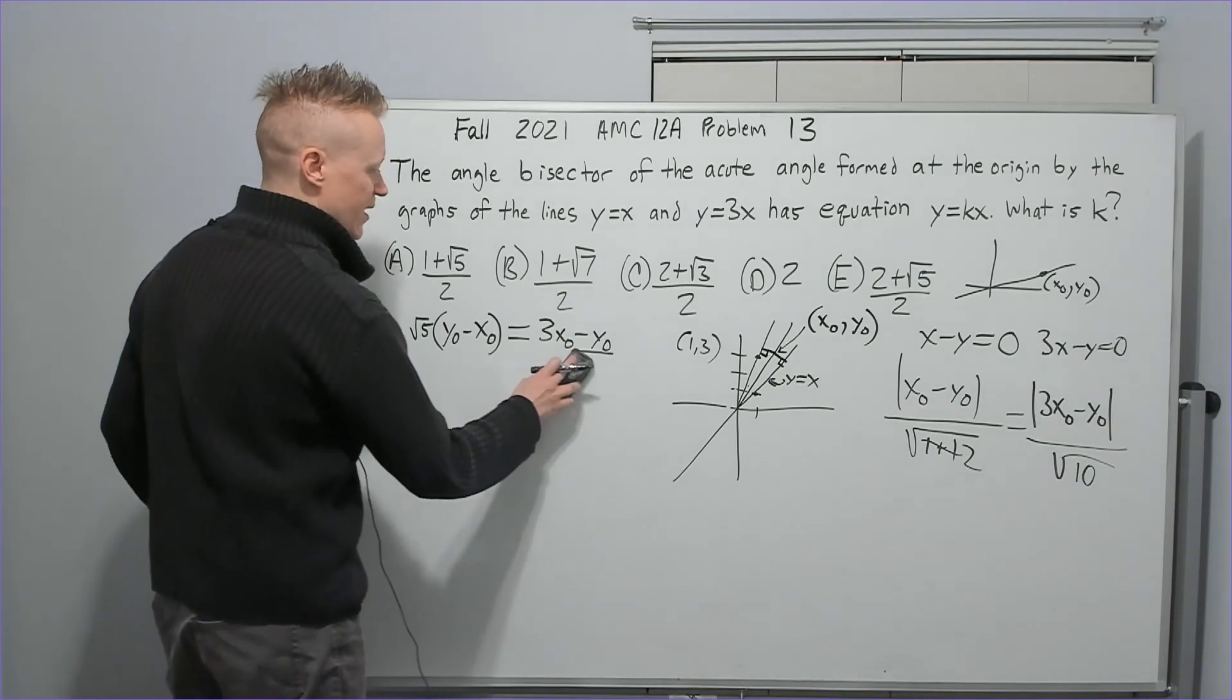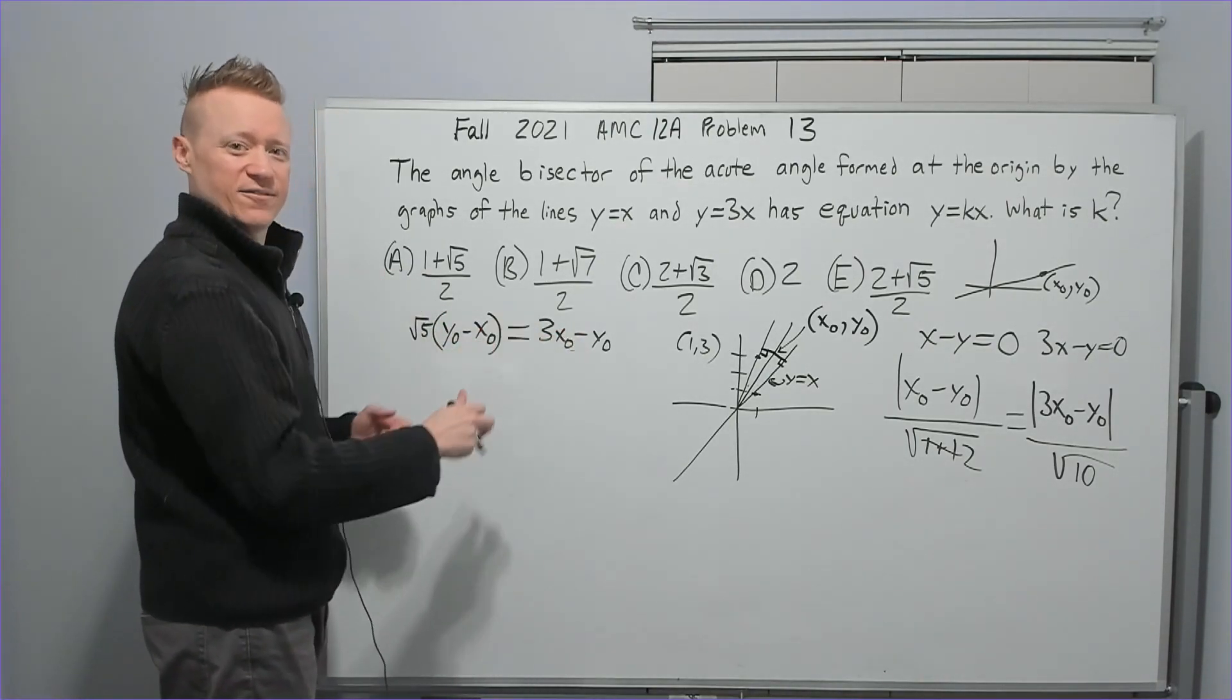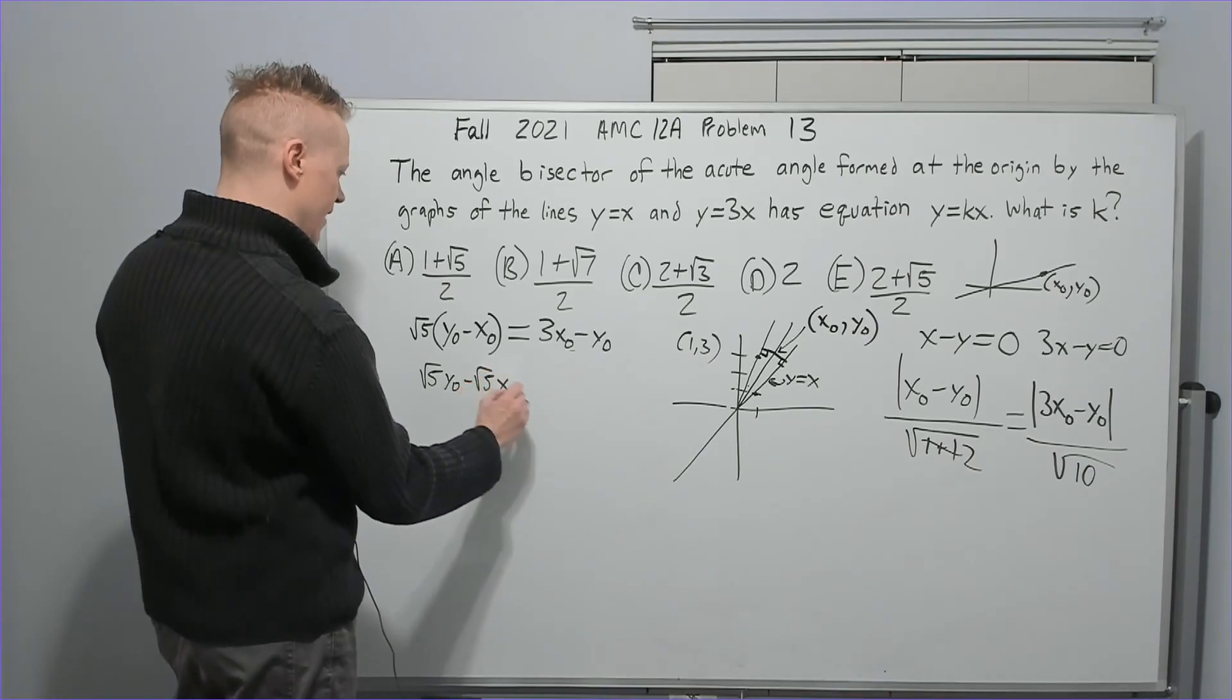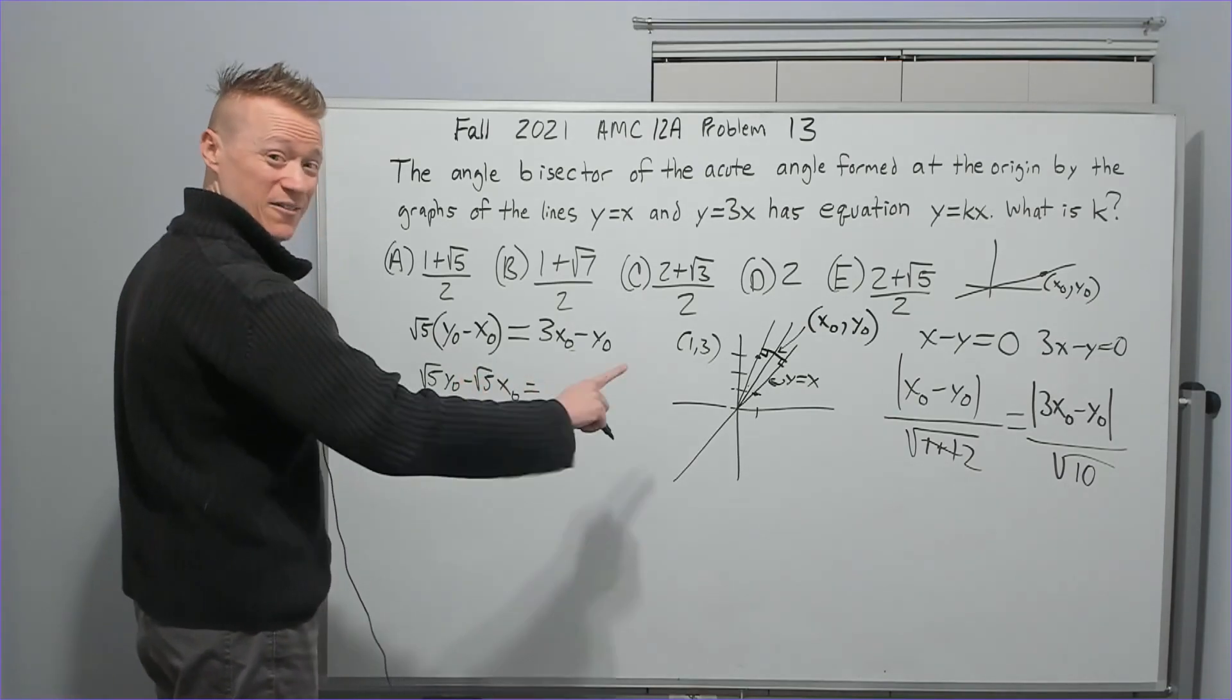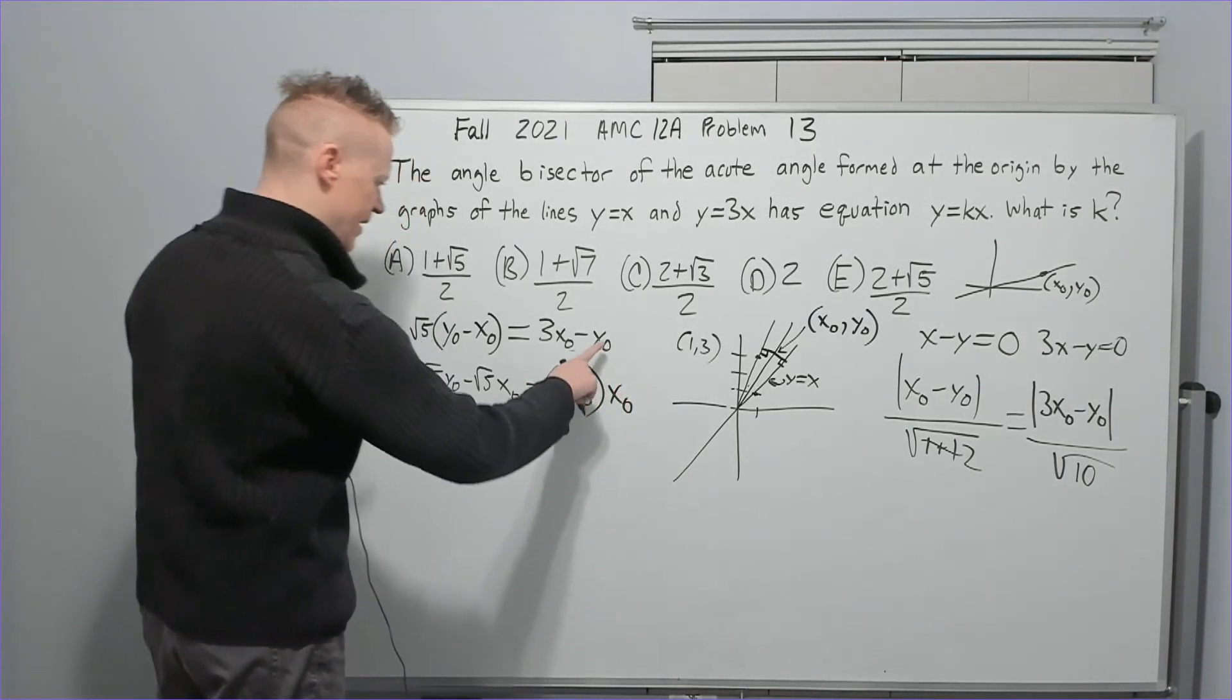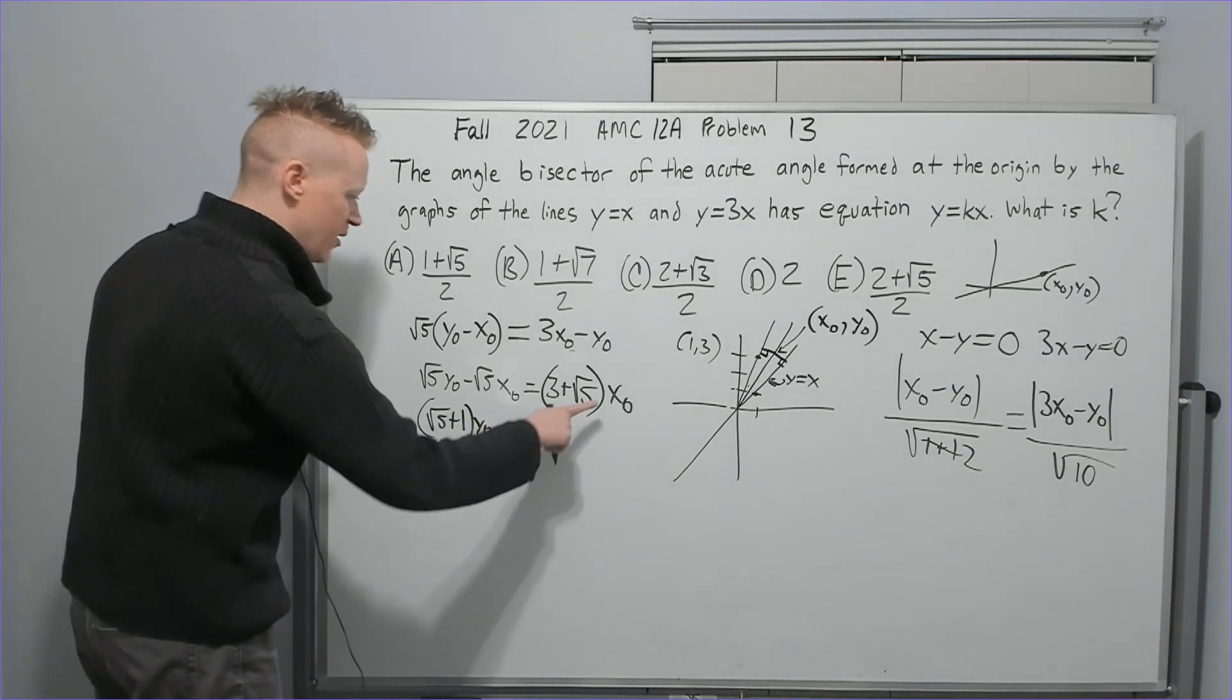Here we go. We're going to have 3x sub naught minus y sub naught over root. Oh, no, no. We already got rid of that. So that's gone. This is it. This is what we have. So we're not timesing anything. We've got the root 5 over here. Let's distribute and move things across and all that and finish this problem off. And we've got root 5y sub naught minus root 5x sub naught equals, I'm just going to leave it there. I'm going to move the negative to where it's positive and factor out the x sub naught simultaneously.